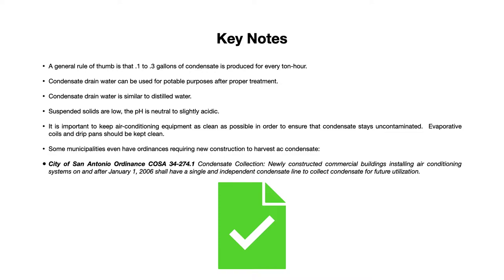It is also important to keep the air conditioning equipment clean — free of debris, bacteria, dust, and dirt. That includes not just the evaporative coils, but the drip pans underneath the evaporative coil and the drain line should also be kept clean. Some municipalities even have ordinances now requiring new construction to harvest AC condensate — for example, the city of San Antonio, Texas, for newly constructed commercial buildings installing air conditioning systems.